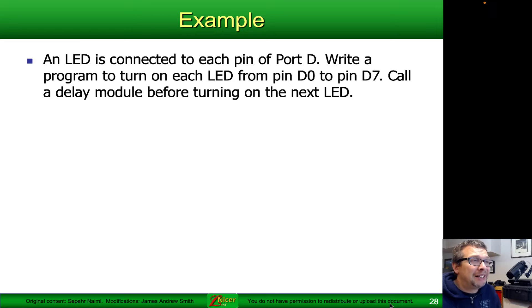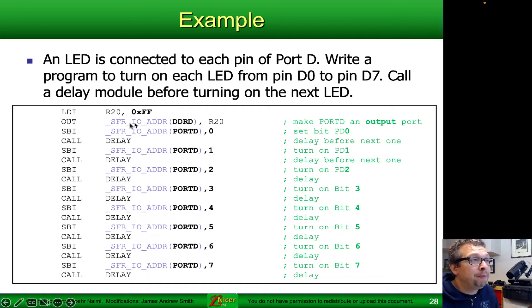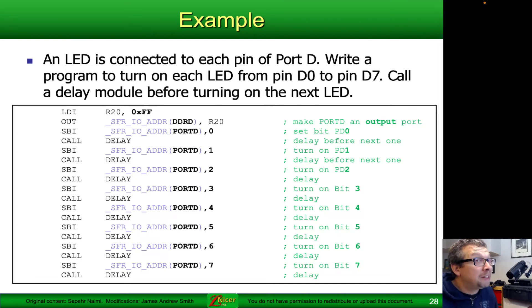Another example: an LED is connected to each pin of port D. Write a program to turn on LEDs from pin D0 to pin D7, calling a delay module before turning on the next LED. We set DDR on port D to all ones using a temporary register R20, then use SBI to set each bit one at a time — port D bit 0, delay, bit 1, delay, through bit 7. The assumption is all port D bits were initially cleared to zero.